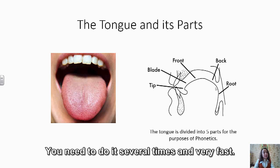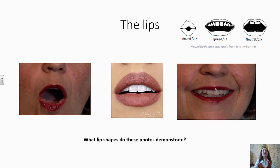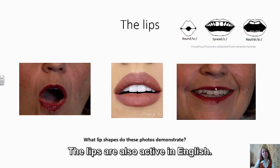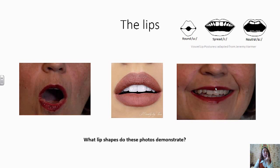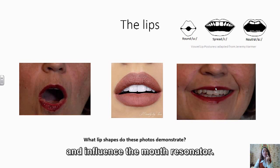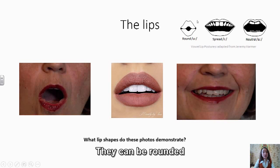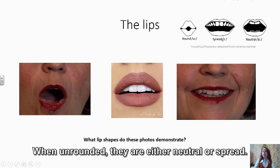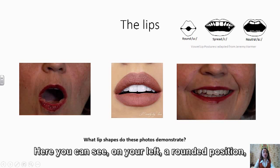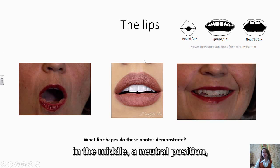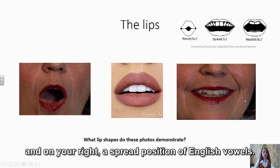The lips are also active in English. They change the shape and size of the mouth opening and influence the mouth resonator. They can be rounded or unrounded. When unrounded, they are either neutral or spread. In the pictures you can see on your left a rounded position, in the middle a neutral position, and on your right a spread position of English vowels.